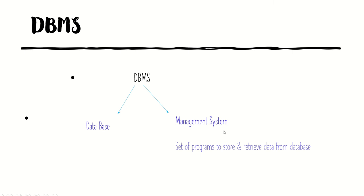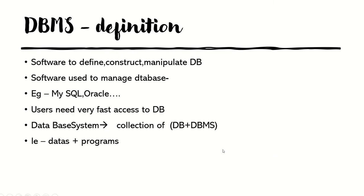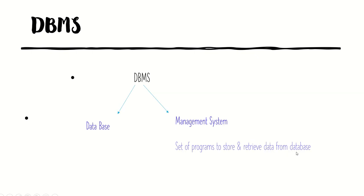So when we combine, the definition of DBMS is: a collection of interrelated data and a set of programs in order to store and retrieve data. There are different operations we have to do in a database. Suppose a new student comes to your class — we have to insert the new student's information into the existing database. If a student is discontinuing their studies, we have to remove their information — that is, we have to delete it.